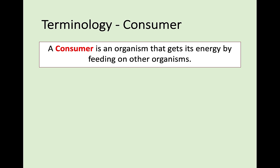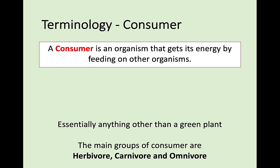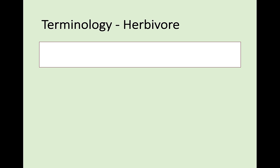If you are not a producer, you must be a consumer. A consumer is an organism that gets its energy by eating other organisms — they cannot produce their own food. There are three main types of consumer: herbivores, carnivores, and omnivores.